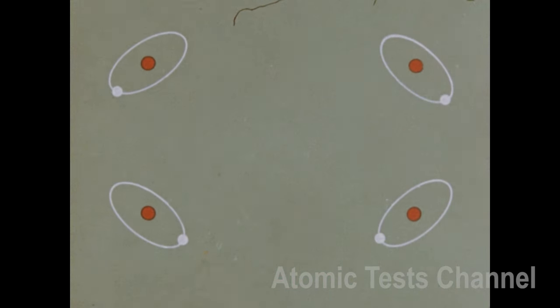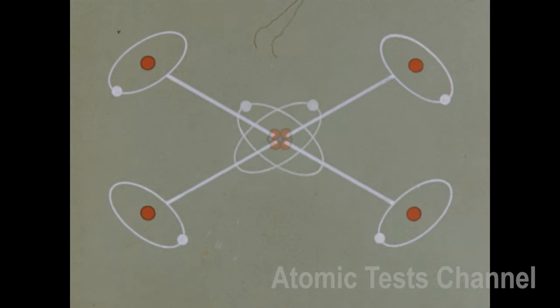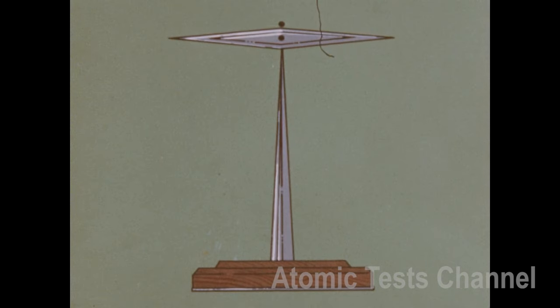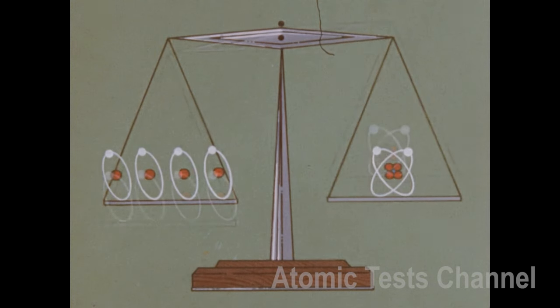Fusion occurs when hydrogen atoms are fused together in the presence of enormous heat to form helium. In fusion, as in fission, the new atom weighs less than the original atoms and the loss of mass is turned into energy according to the equation of Einstein.